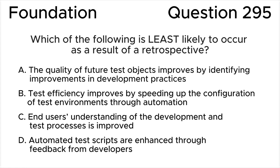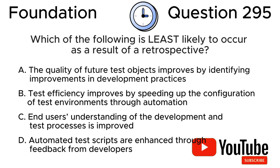ISTQB foundation level question 295: Which of the following is least likely to occur as a result of a retrospective? A) The quality of future test objects improves by identifying improvements in development practices. B) Test efficiency improves by speeding up the configuration of test environments through automation. C) End users' understanding of their development and test processes is improved. D) Automated test scripts are enhanced through feedback from developers.